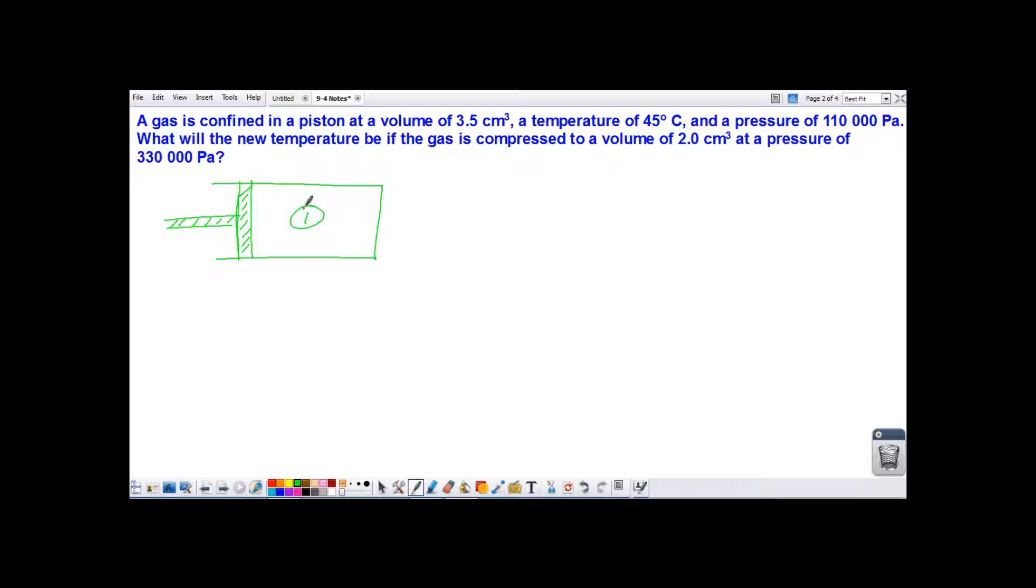And in situation 1, we know a few things. First, we know that the volume in situation 1 is 3.5 cubic centimeters. The temperature in situation 1 is 45 degrees Celsius, and the pressure in situation 1 is 110,000 pascals.